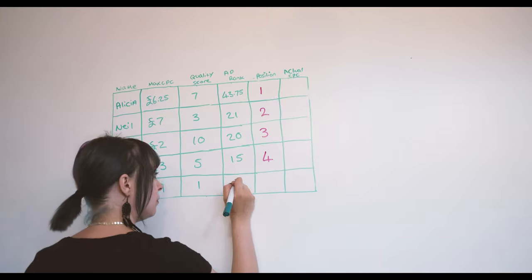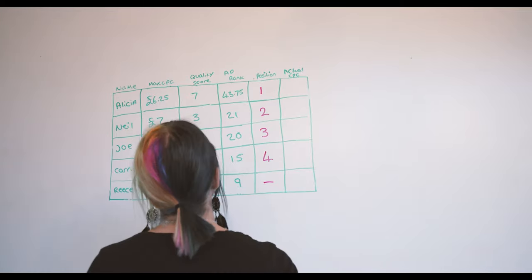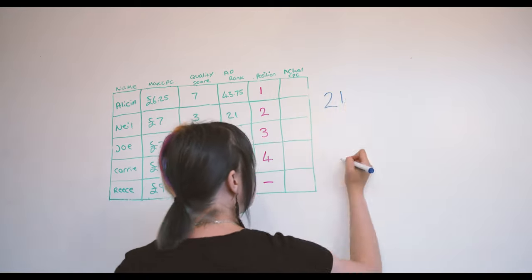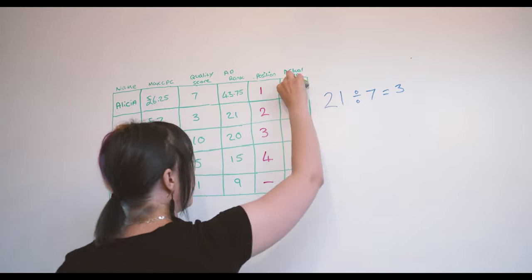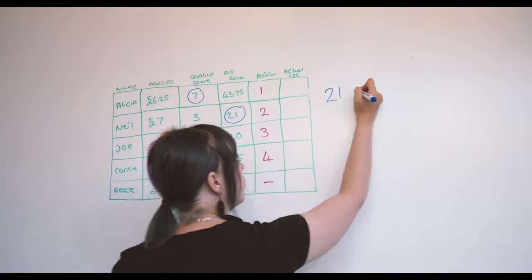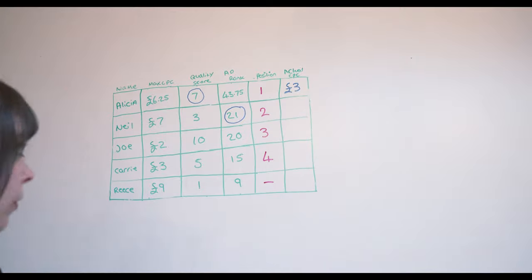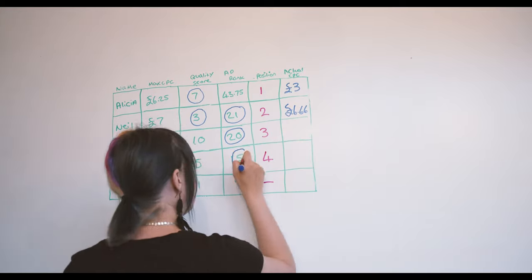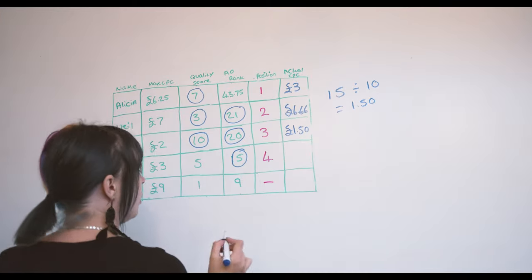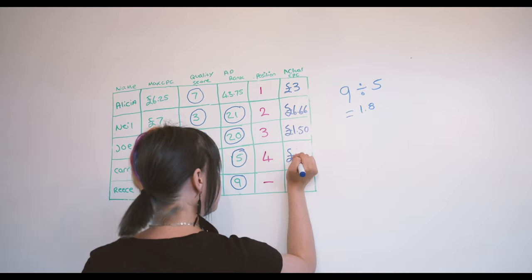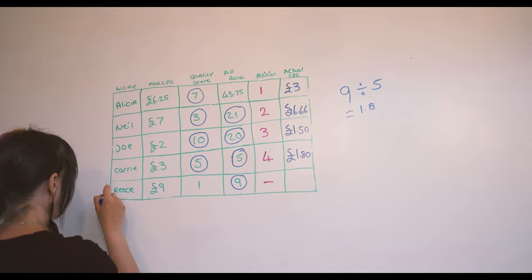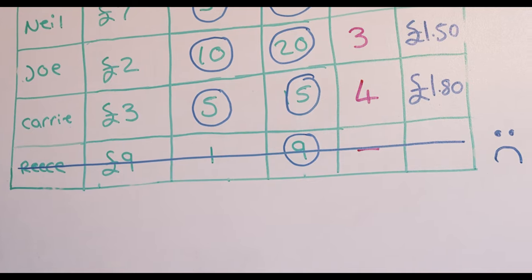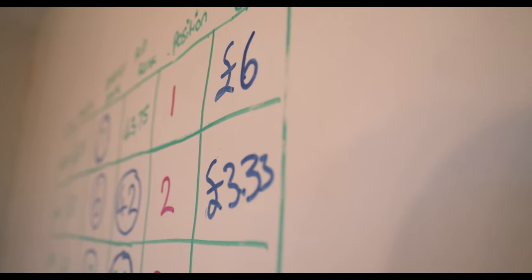To calculate Alicia's actual CPC, you divide 21 — the ad rank of the advertiser directly below her — by her quality score of 7. So 21 divided by 7 equals 3. The actual amount Alicia pays for a click is £3, which is much less than her max CPC bid of £6.25. Neil's actual CPC is 20 divided by 3, which equals £6.66. Joe's actual CPC is 15 divided by 10, which is £1.50. Carrie's actual CPC is 9 divided by 5, which equals £1.80. If there were five ad positions, Reece would get fifth place, but since there's no advertiser below him, the price he pays would be determined by Google — potentially his full max CPC bid.